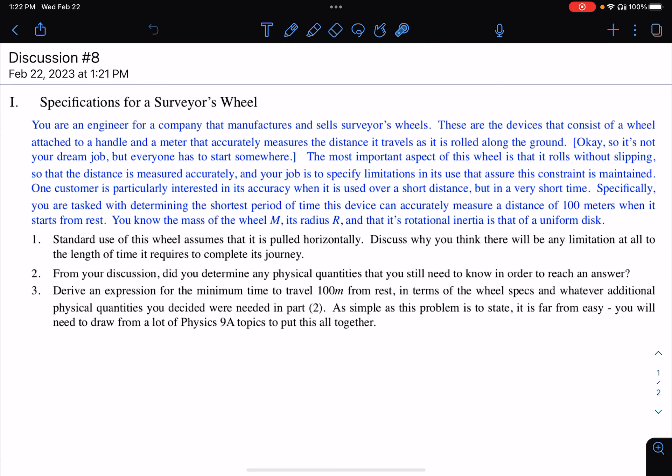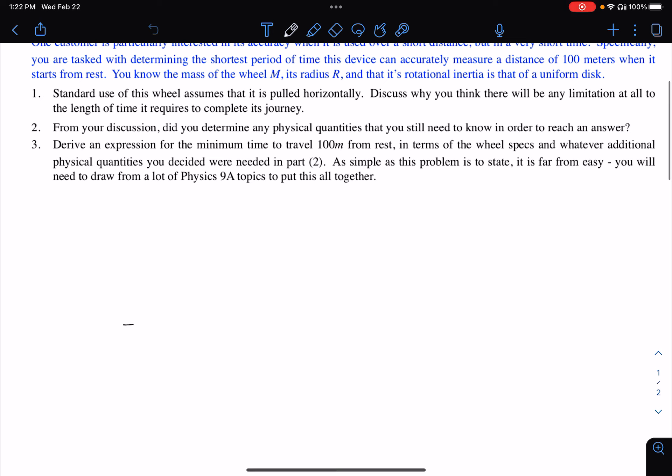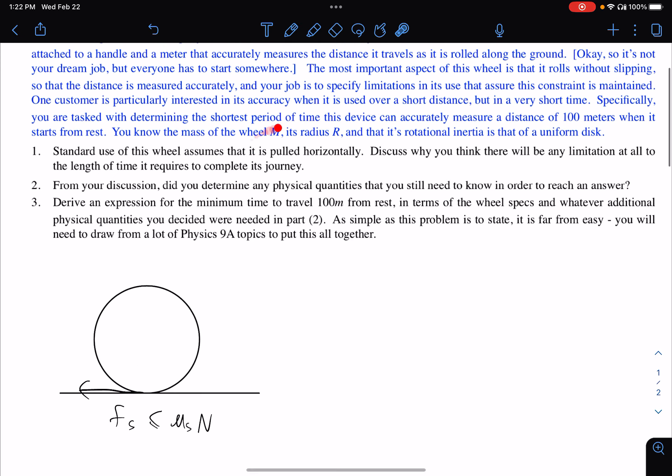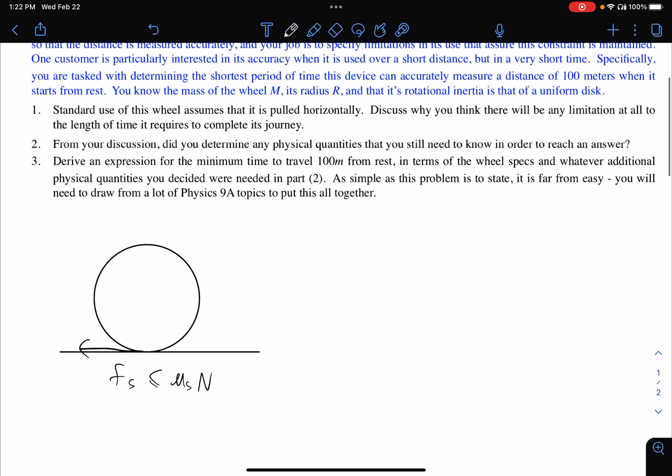The key for this question is that when the wheel is rolling without slipping, the friction, or more precisely the static friction between the wheel and the ground, cannot exceed the maximum static friction, which is μₛ times the normal force. So that's the limitation on it, and the key to solve this problem quantitatively is to realize the relation between this friction and the force that you pull on this wheel.